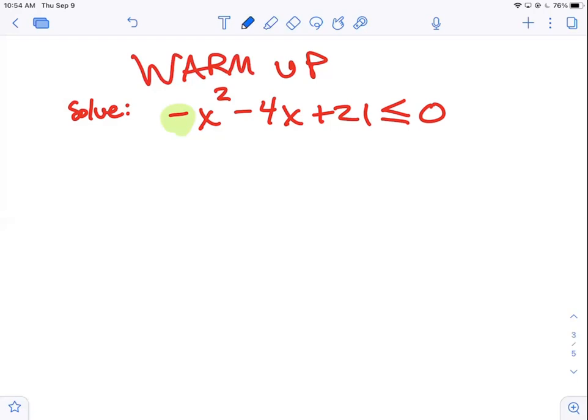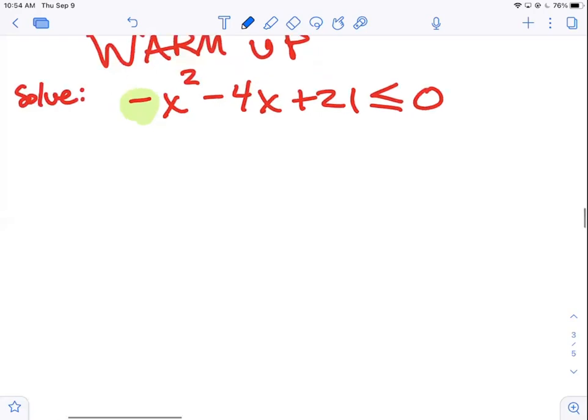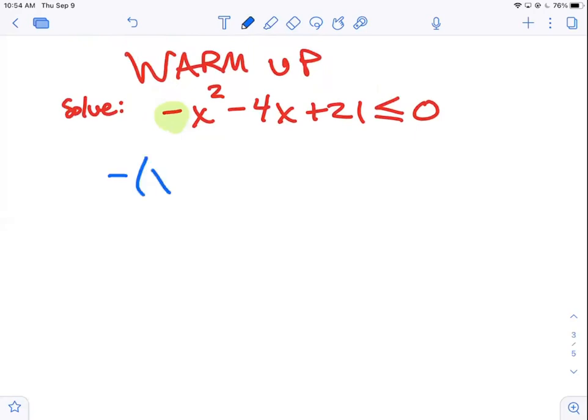So in order to answer this question, we're looking for the values of x that make that parabola negative or zero. So we need to know the x-intercepts, which are also called roots or zeros. And for that, we need to do what with the quadratic? We need to factor it, right?